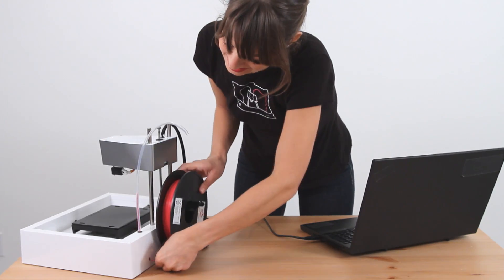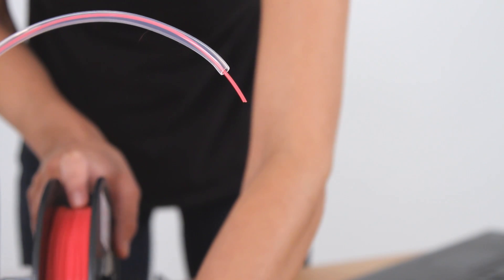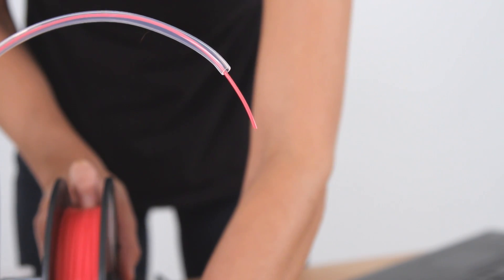Feed it until it is protruding about 2.78 inches from the tube. Kidding, no need to be exact, just enough so you can grab it about 2 to 3 inches.